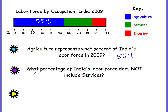Second question: what percentage of India's labor force does not include services? First, find what percent includes services. The green starts at 55%, not zero — so don't say 85%. From 55 to 65 is 10%, 65 to 75 is another 10%, and 75 to 85 is a third 10%, totaling 30%. Services is 30%, so 70% of the labor force does not include services.